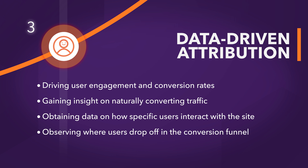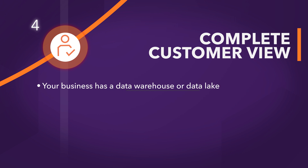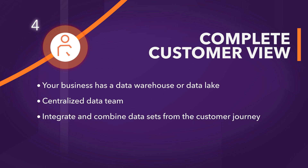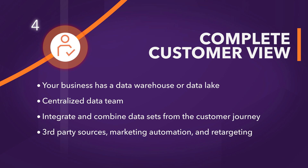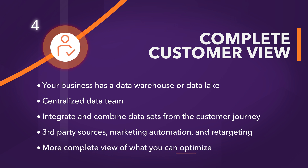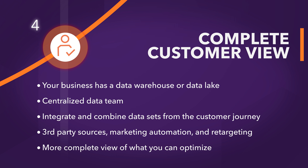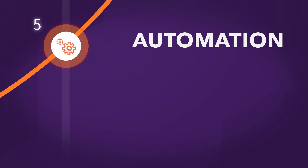Your business is starting to segment your users and is building personalized experiences for them. Users at Level 4 are likely to have a data warehouse or a data lake, along with a centralized data team. Your business is beginning to integrate and combine datasets from various parts of the customer journey, like third-party sources, marketing automation, retargeting, and more. The result is a more complete view of what aspects across various channels you can optimize. This last stage is considered the pinnacle of the curve.